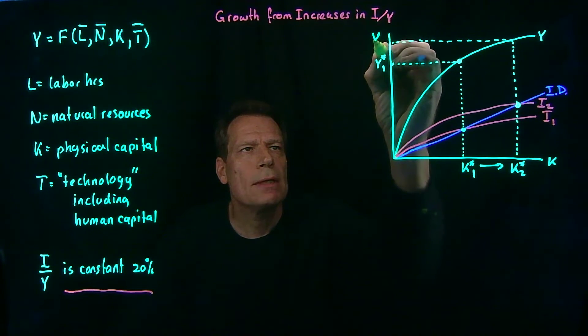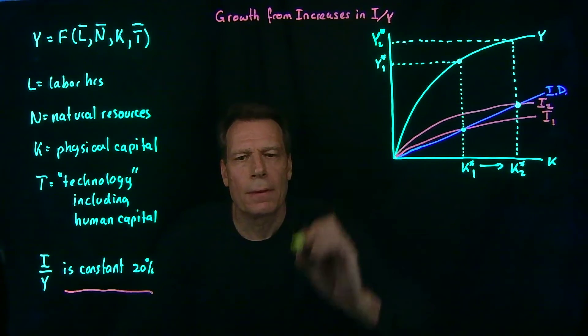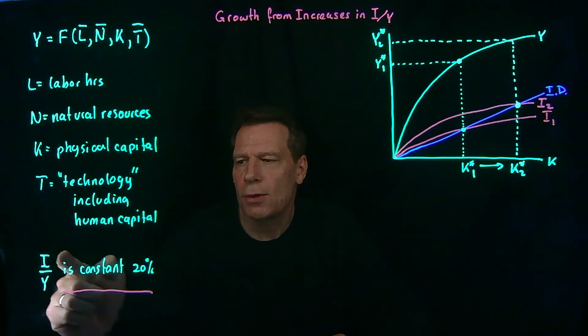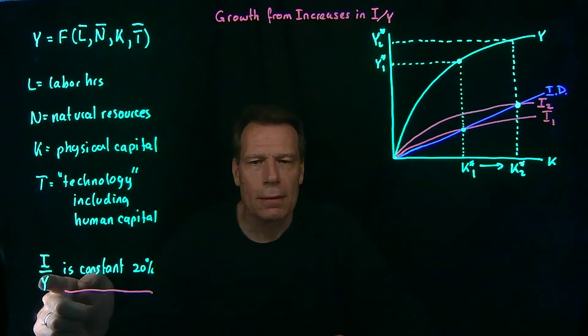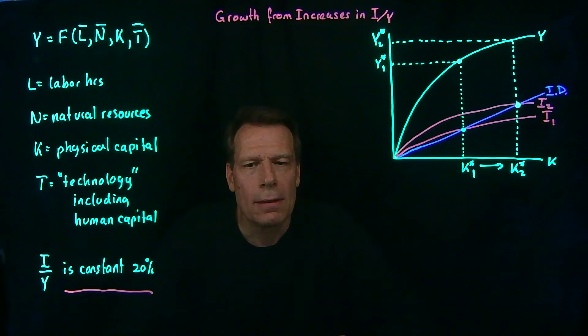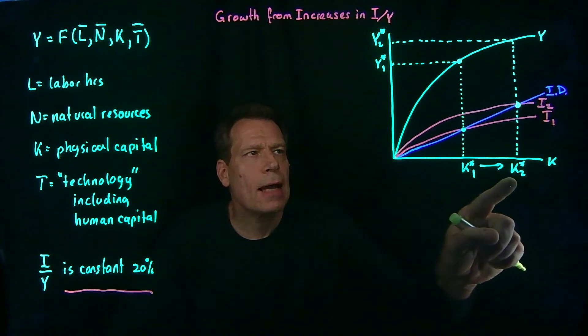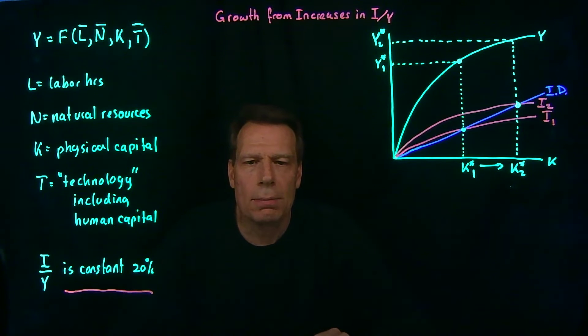So we have a new GDP level here. We've just produced economic growth. So one way we can produce economic growth is to just focus on investment in the economy. If we increase the share of investment as a fraction of GDP, we will increase the level of capital and that's going to cause an increase in the level of GDP.